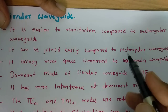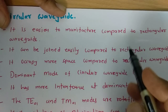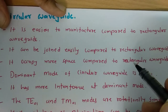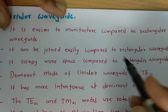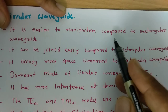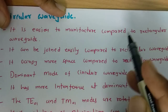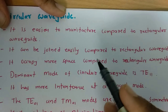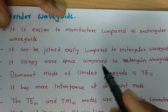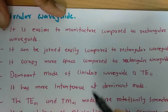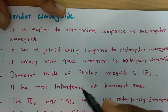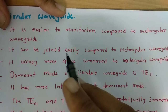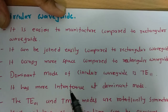So we don't use circular waveguide in most applications. We can use it for easier manufacturing and easier joining, but it requires more space. So when space is a concern, we don't use circular waveguide.